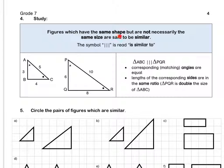Figures which have the same shape but are not necessarily the same size are said to be similar. Let's look at these two triangles. Triangle ABC is similar to triangle PQR because the corresponding or matching angles are equal. That angle is equal to that angle. Angle C is equal to angle R, and B and Q are both right angles. Also, the lengths of the corresponding sides are in the same ratio. AB times two is PQ which is six. BC times two is QR which is eight. And lastly AC times two is the length of PR, which is ten.